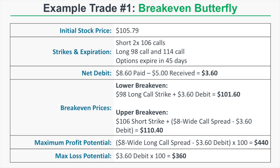Let's get into some example trades. Example trade number one: a butterfly that breaks even. The initial stock price is $105.79. We'll buy the 98 call, sell two of the 106 calls, and buy one of the 114 calls — all expiring in 45 days. We're essentially long the 98/106 call spread and short the 106/114 call spread.